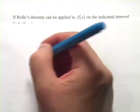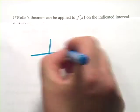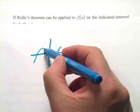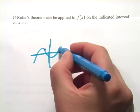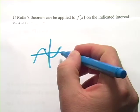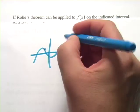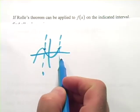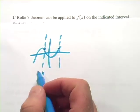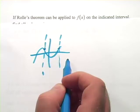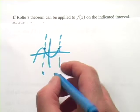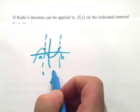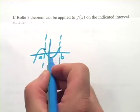Rolle's Theorem states that if you have a function — and you pick an interval where the value of the function where the interval starts and the value of the function where the interval ends are the same, so these are the same y values — then at some point there has to be a spot where the slope of the tangent line is zero. There's some value c, if our interval starts at a and goes to b, there's some value c in there where the slope of the tangent is zero.